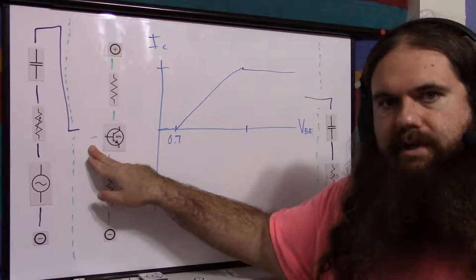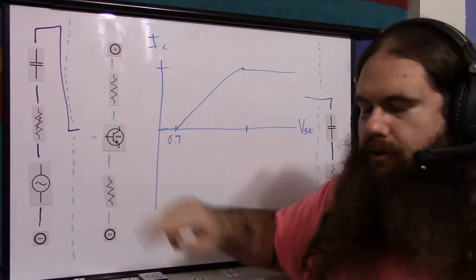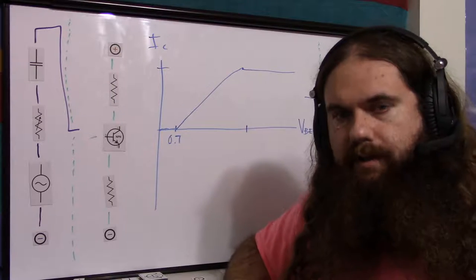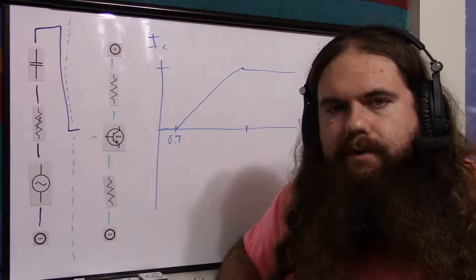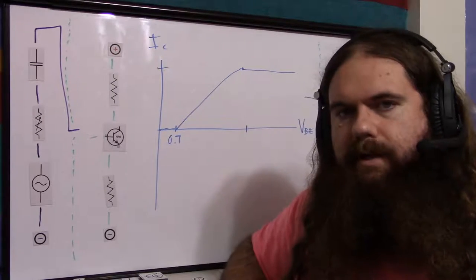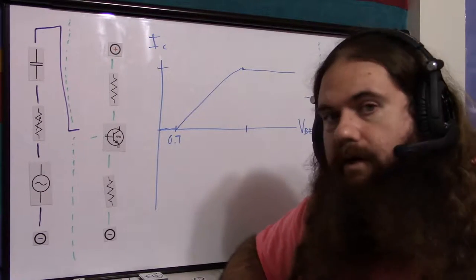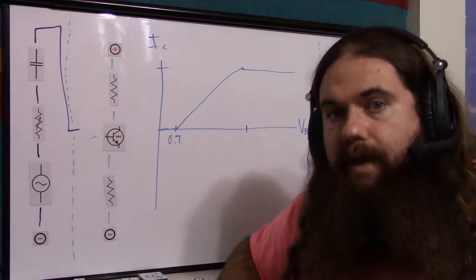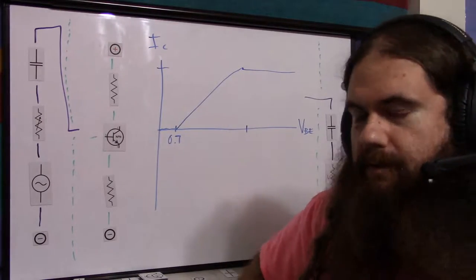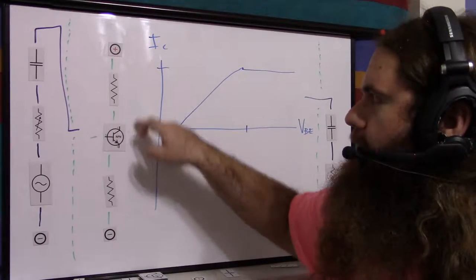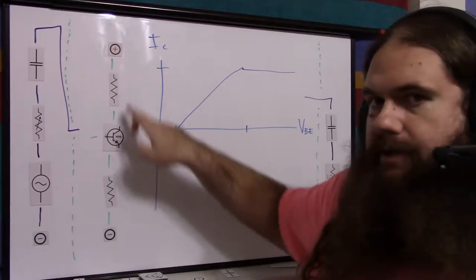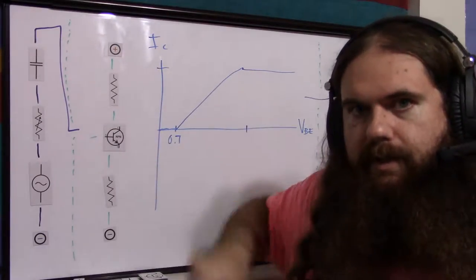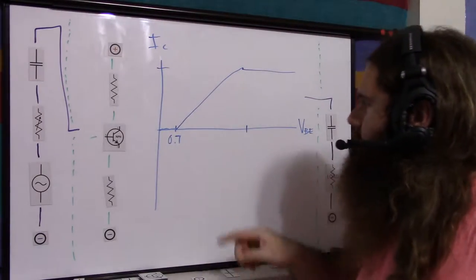The signal source is weak — it could be an oscilloscope function generator, the audio port out of your computer, or any number of things not going to provide much power — just voltage with little current. We amplify with an external source: batteries or the wall. That's how the amplifier works.